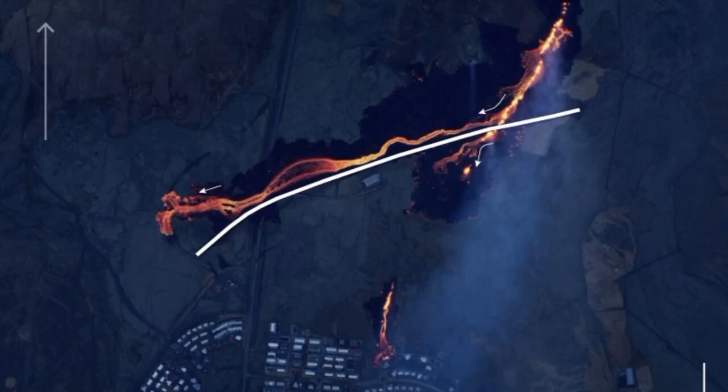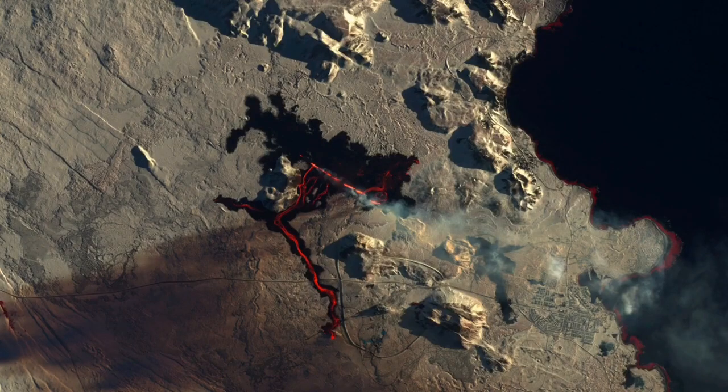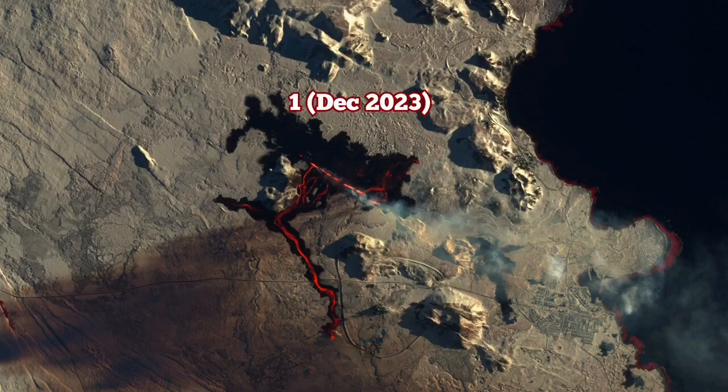We had the first one cutting through, slicing through the defense, then another part of it coming and actually invading the town, north part of Grindavik, causing some harm and burning of a few houses.